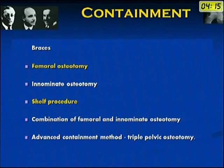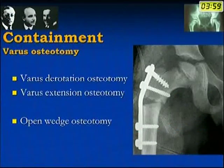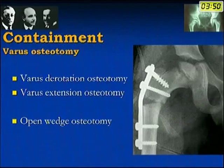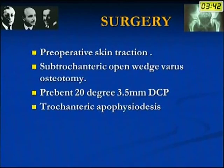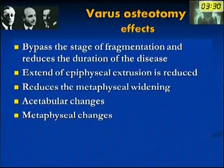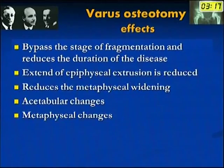Various methods are available for containment: braces, femoral osteotomy, innominate osteotomy, shelf, combination of femoral and innominate osteotomy, and advanced methods like triple pelvic osteotomy. We in our center mainly do femoral osteotomy and the shelf procedure — specifically a varus derotation osteotomy or varus extension osteotomy, usually an open wedge osteotomy with trochanteric apophyseal arrest. Pre-operative skin traction is given to improve abduction range. We usually pre-bend the plate at 20 degrees. The advantages are it bypasses the fragmentation stage, reduces disease duration, epiphyseal extrusion, metaphyseal widening, and acetabular changes.